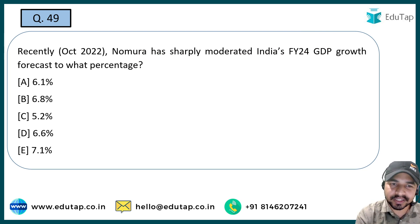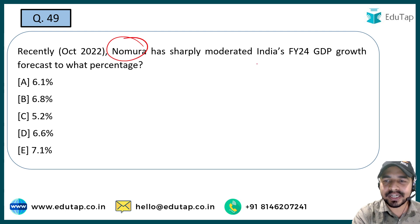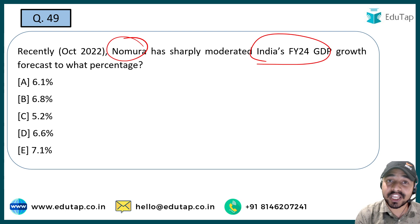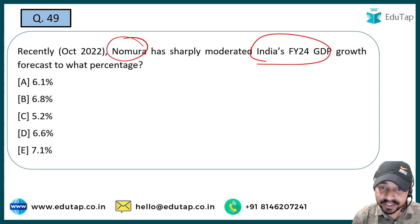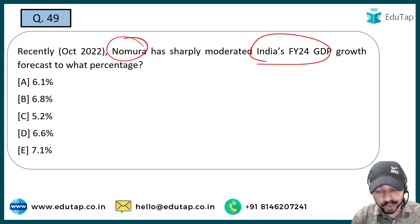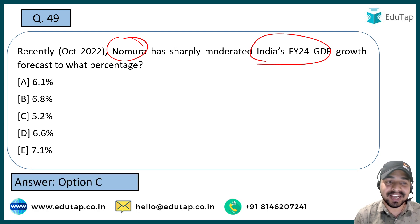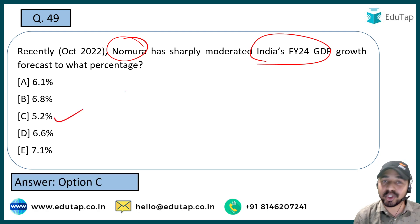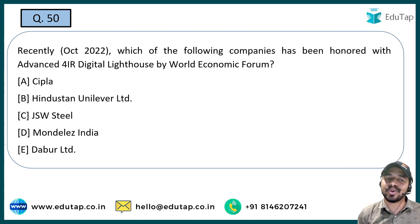The next question: Nomura has sharply moderated India's fiscal year 2024 GDP growth forecast. Tell what the new percentage is where Nomura has set India's FY2024 forecast. The right answer is 5.2%.